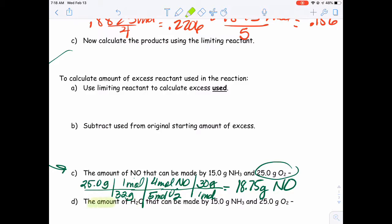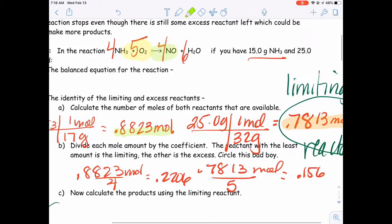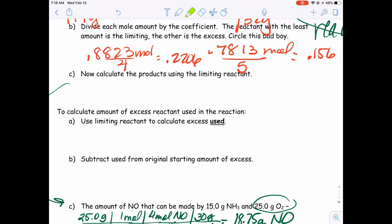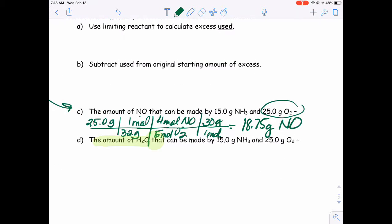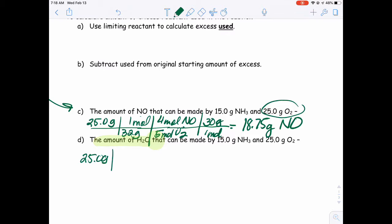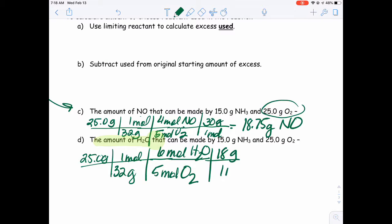Now we're going to look at the amount of water. Our coefficient for water is 6. So we're going to take 25 grams of oxygen divided by 32 grams in one mole. We have 5 moles of oxygen still. But now we have 6 moles of water. And our molar mass of water is 18 grams in one mole. So if I do that math, 25 divided by 32 times 6 divided by 5 times 18, I get 16.87.